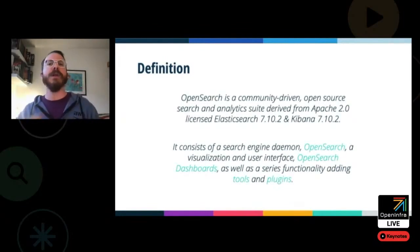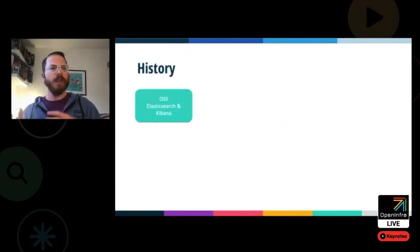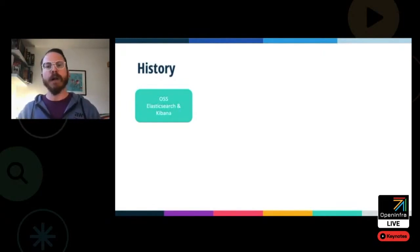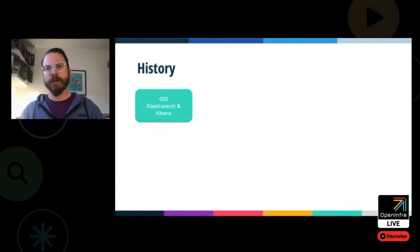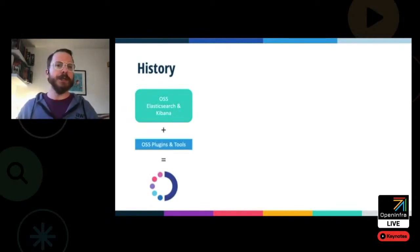Let's talk about the history and why this has come about. Elasticsearch and Kibana existed for a long time as open-source licensed projects. Our customers at Amazon and AWS, as well as internal users, found a number of things they wanted to add to this open-source core, in the way of plugins and tools. These were all open-source, and we released them together with the open-source core of Elasticsearch and Kibana to create OpenDistro for Elasticsearch.